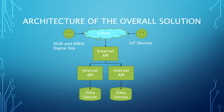Here we have the overall solution shown in a diagram — it's basically the architecture for the whole solution. You have the cloud where the IoT devices and HGM digital side access the external API from. The external API connects to multiple internal APIs, and some of the internal APIs point to different data sources, getting different information from different systems.